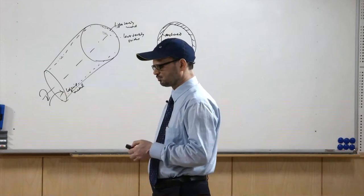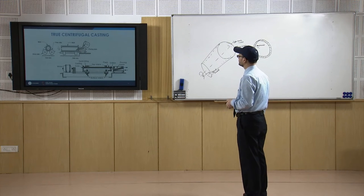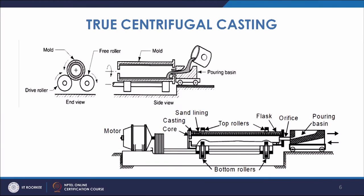Looking at the figure, this shows the true centrifugal casting machine where you pour liquid metal into the mould. The mould rotates on a roller mechanism at high speed. You give the required amount of metal, it rotates, and after some time you take it out and get the required cast product.